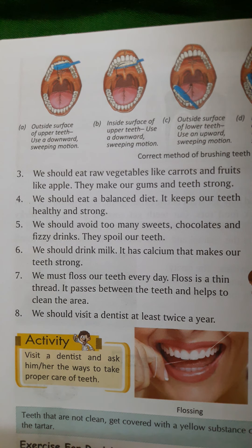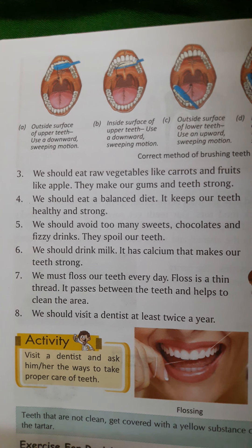Point number three: we should eat raw vegetables like carrots and fruits like apples. They make our gums and teeth strong.